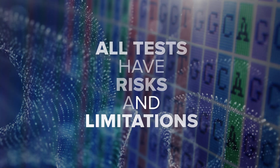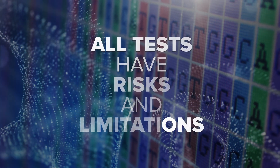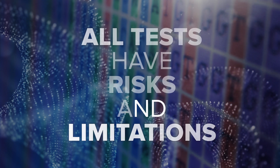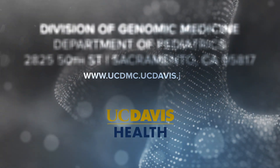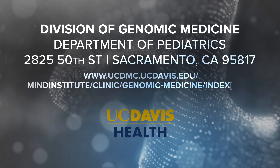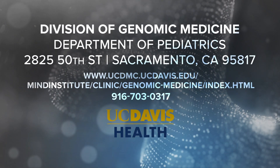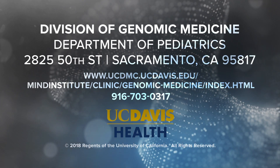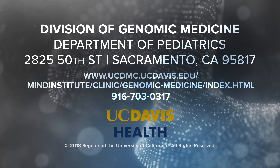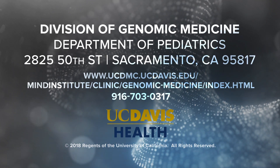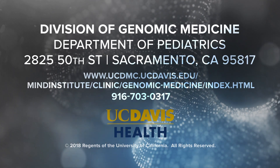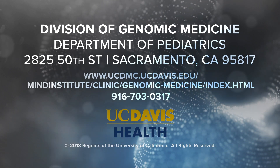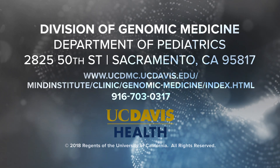As a reminder, all genetic tests come with risks and limitations, so it's important that your patient has the opportunity to discuss their test results with a genetic counselor. If you would like to learn more about prenatal genetic diagnosis or screening, or would like more information on the genetic counseling services available to you and your patients, the Division of Genomic Medicine is here to help. Our clinic is located in the MIND Institute on the Medical Campus in Sacramento. You can refer patients to our Genomic Medicine Clinic, visit our website, or call us with questions or to speak with a genetic counselor.